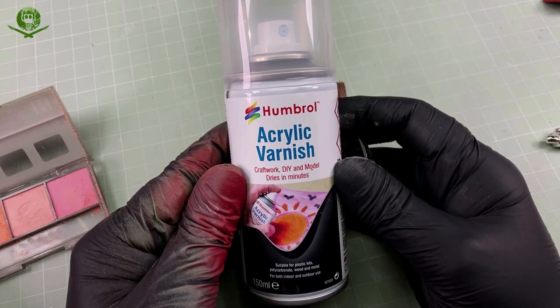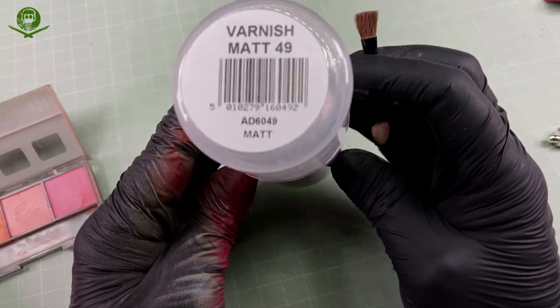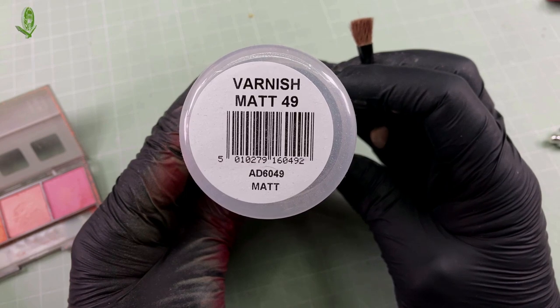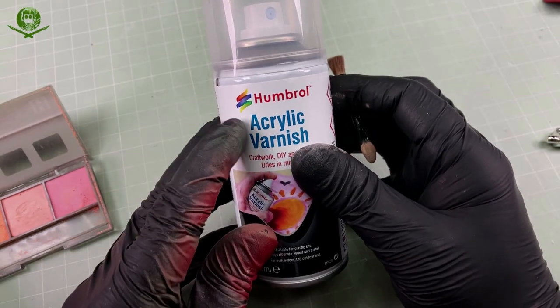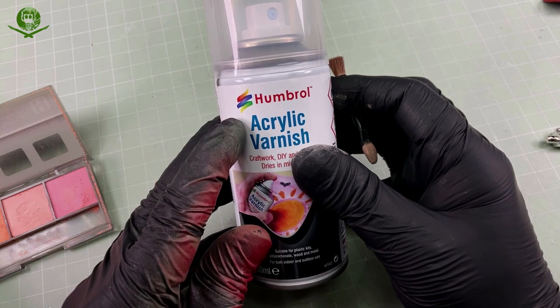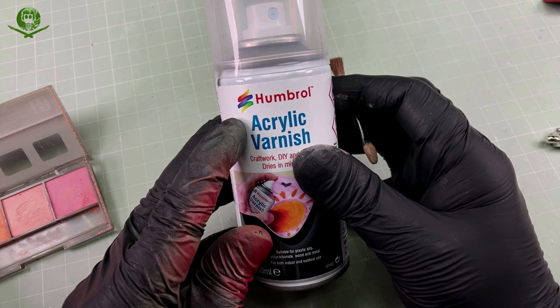To seal in the pastel and to protect the paint while still masked up, I applied some Humbrol 49 Acrylic Rattlecan Varnish. This stuff is brilliant but must be used outdoors. And make sure it says acrylic, not enamel. Spraying an enamel varnish on non-enamel paints will always end badly.